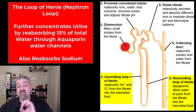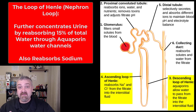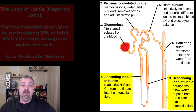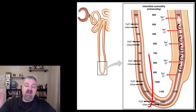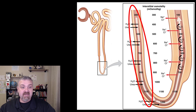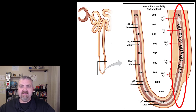The descending loop of Henle has permanent aquaporin channels — channels that allow only water to come through. The more aquaporin channels you have, the more water is reabsorbed. In contrast, the collecting duct has aquaporin channels that are inserted only when needed, based on how much ADH (antidiuretic hormone) you have. As you travel down the descending limb, osmolality increases from 300 to 1200 because water is freely being reabsorbed. On the ascending limb, sodium and chloride are actively pumped back in. So: descending limb reabsorbs water; ascending limb reabsorbs sodium.